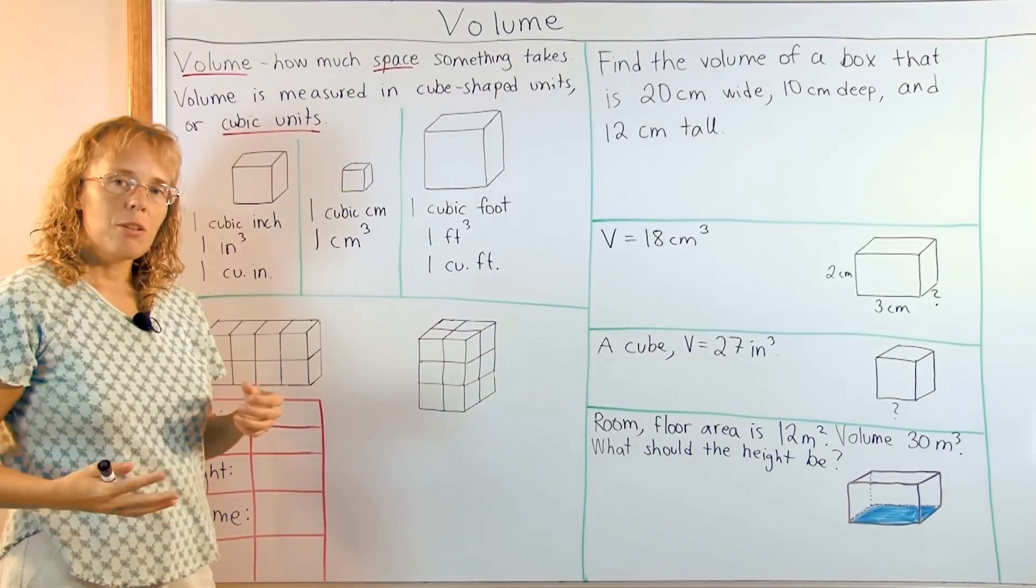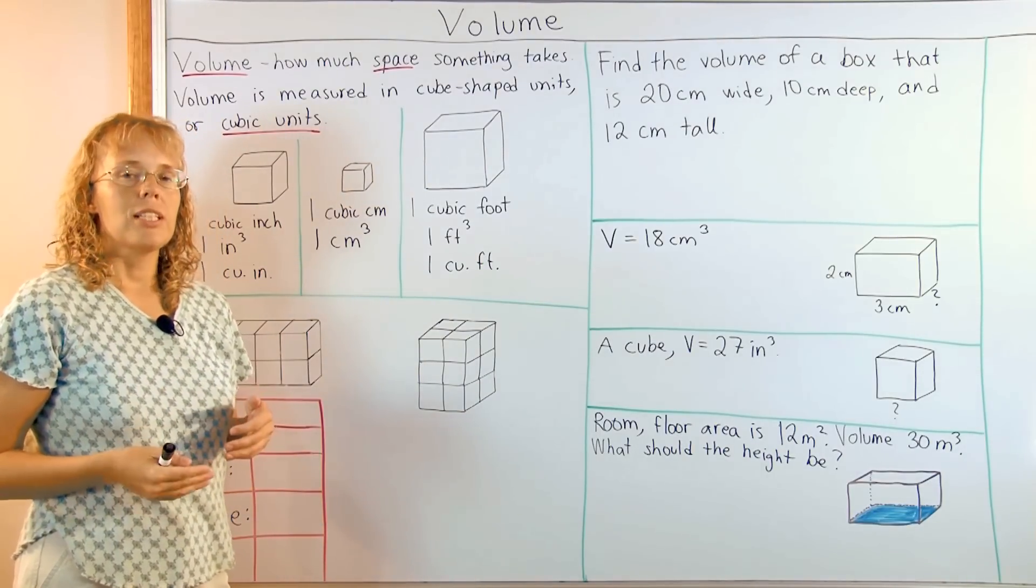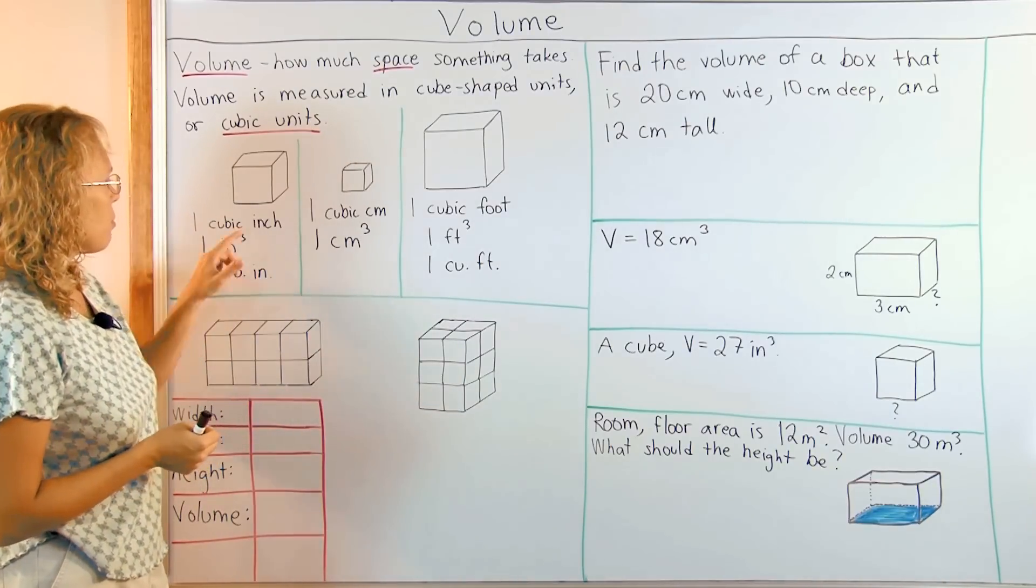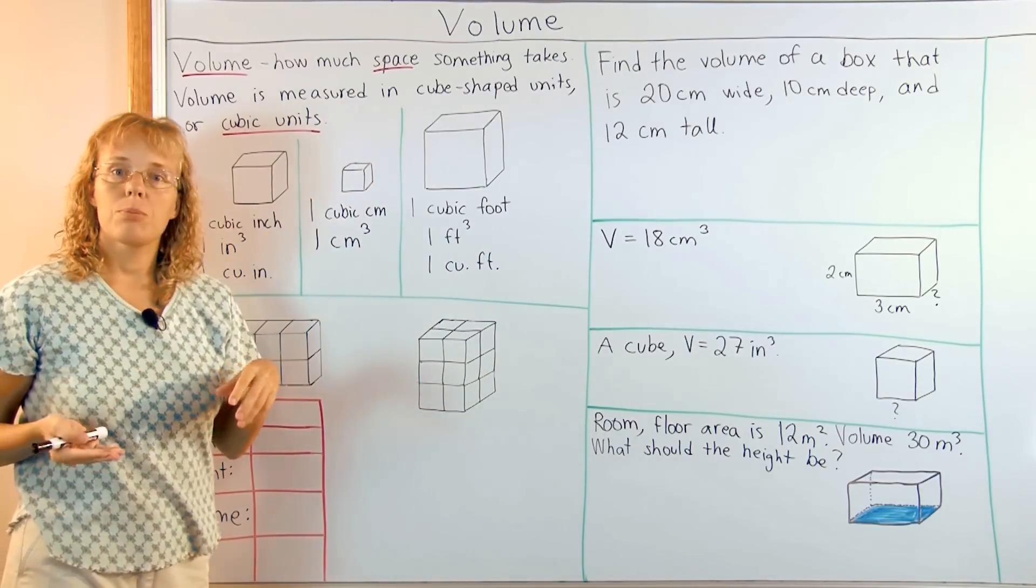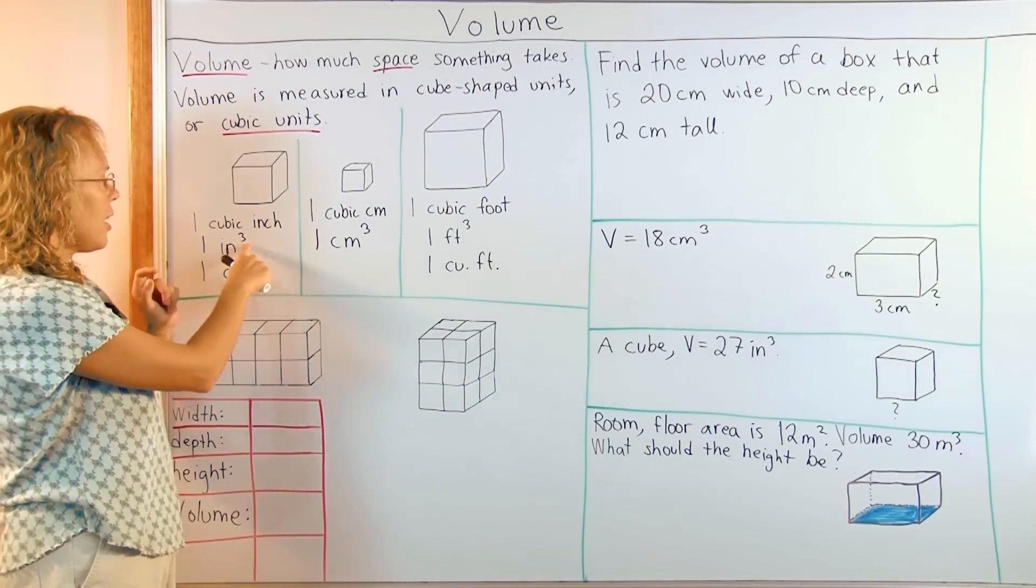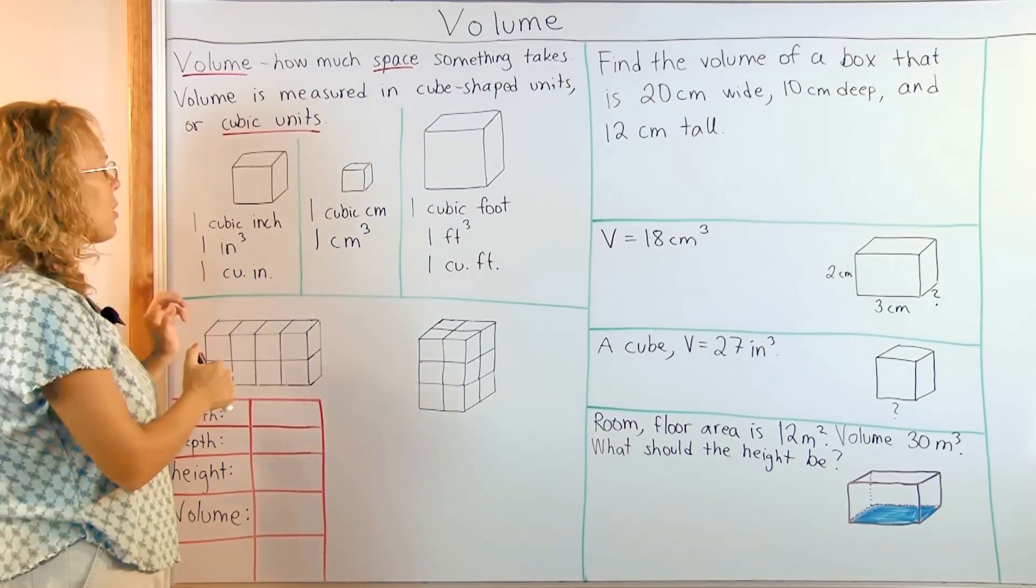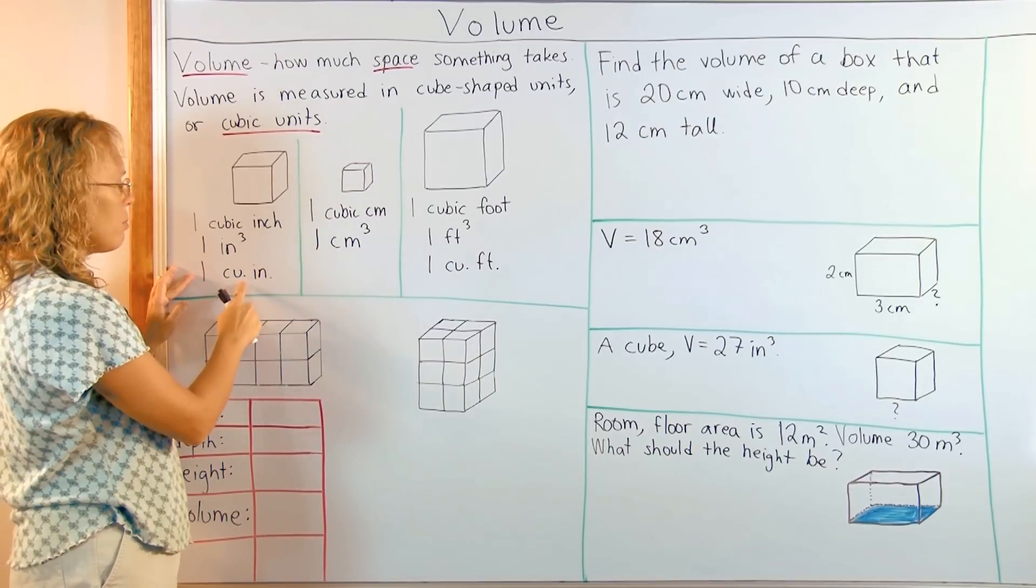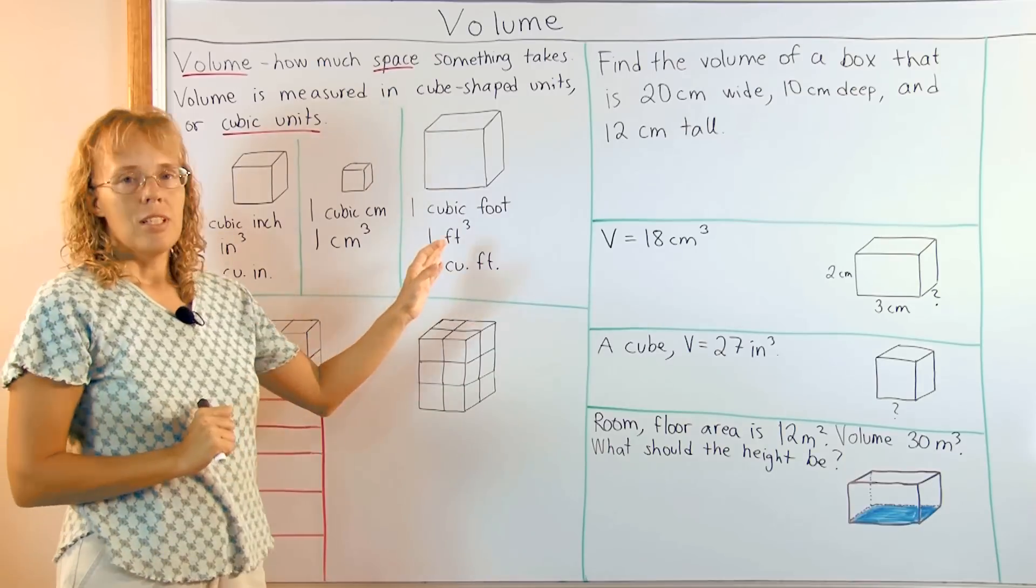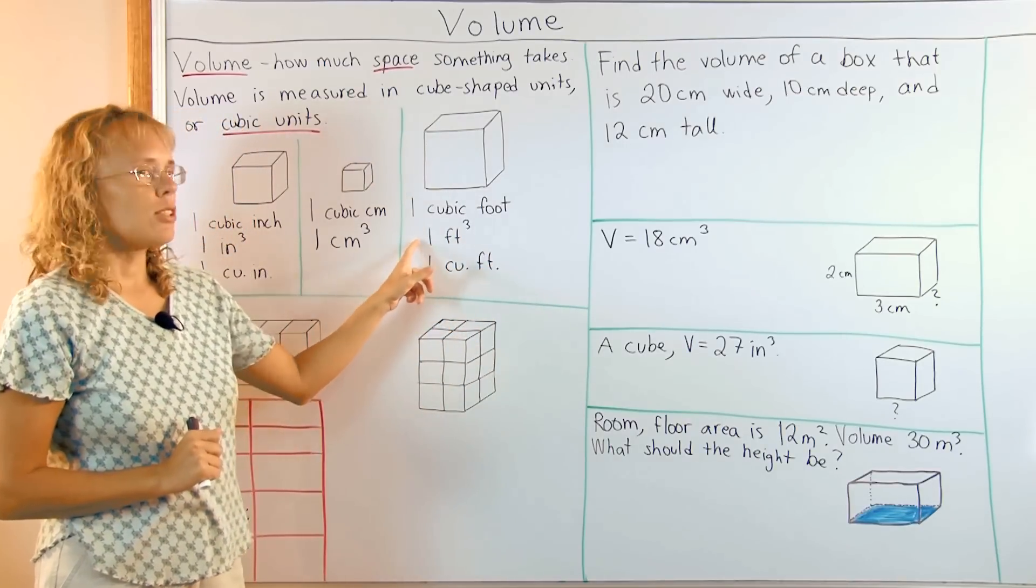Now there are several ways to abbreviate the cubic units and that's why children have difficulty sometimes. For example, one cubic inch, we have two ways to abbreviate it. One, in and then little three here. Elevated three, it's an exponent we call it. Or one, cu. period, in. period. And similarly for one cubic foot, we have two ways to abbreviate it. For metric units there's only one way to abbreviate them, so that's a little easier. One and then cm and this elevated three.